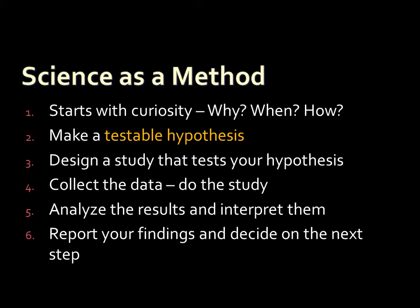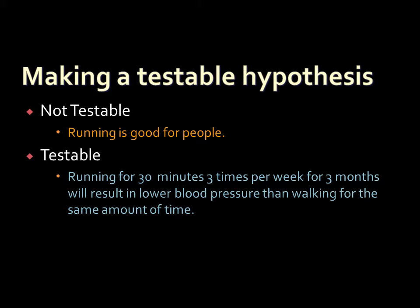Moving on to the second step in the scientific method: turning initial curiosity or observations into something more structured and systematic — coming up with a testable hypothesis. A hypothesis is the researcher's prediction about what they think they're going to find. For example, if you think you've created a new drug for arthritis, your prediction might be that drug X, taken three times a day for three months, will reduce the pain or swelling of arthritis. The hypothesis is simply your prediction about what you think you'll find.